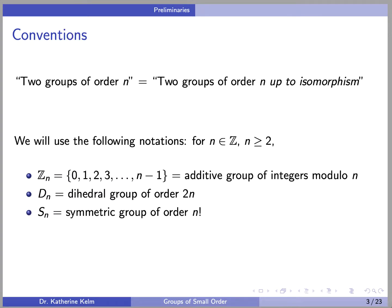Our conventions include the following. When we say how many groups there are of a particular order, we really mean how many groups up to isomorphism. For an integer n greater than or equal to 2, Zn stands for the additive group of integers modulo n, Dn denotes the dihedral group of order 2n, and Sn denotes the symmetric group of order n factorial.